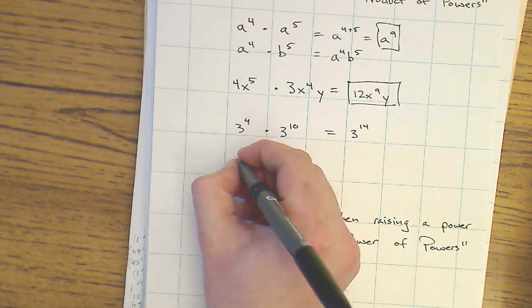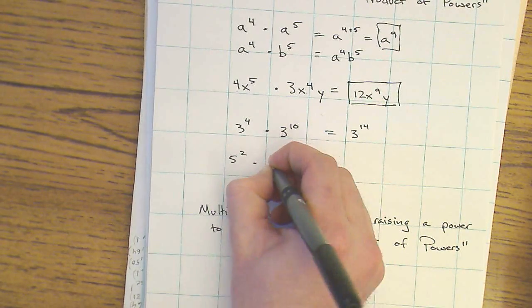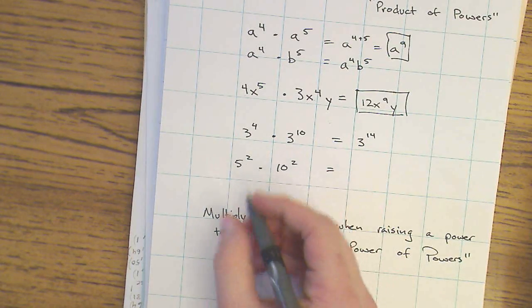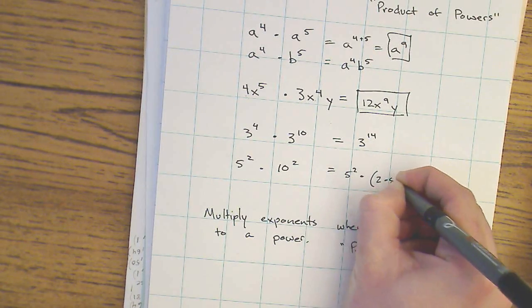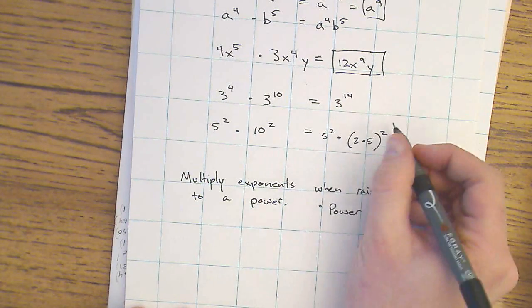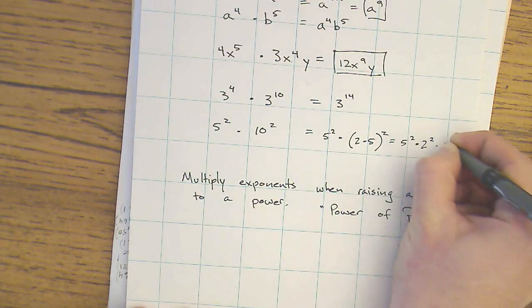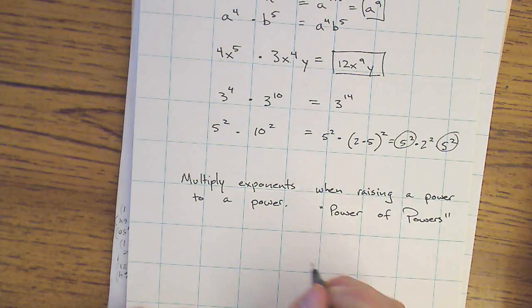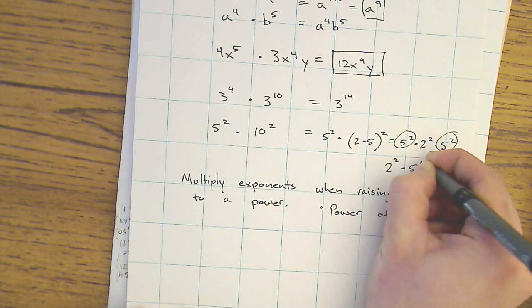One thing to try out would be, imagining you have an expression like this, 5 to the 2nd times 10 to the 2nd. Well, we could actually think of 10 to the 2nd as like this, 5 to the 2nd times 2 times 5 to the 2nd. And in here, this would give us 5 to the 2nd times 2 to the 2nd times 5 to the 2nd. So I found some like bases. I can add their exponents now. So I have 2 to the 2nd times 5 to the 2nd times 5 to the 4th.